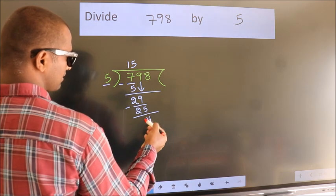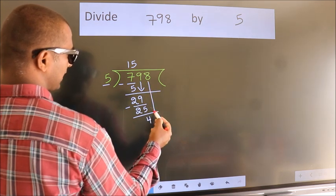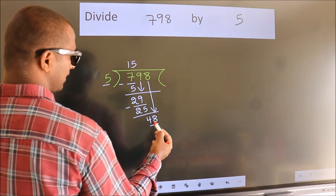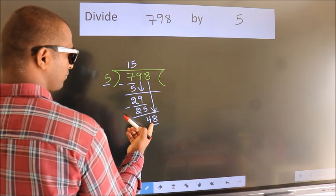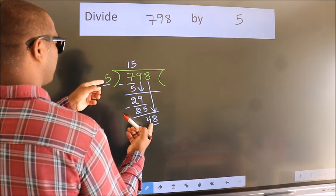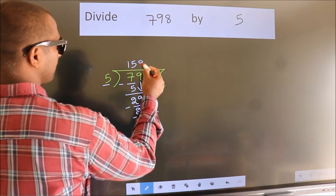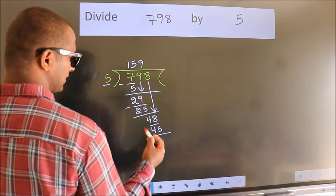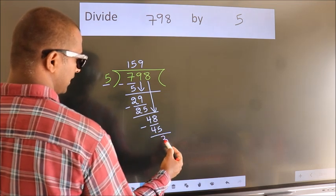After this, bring down the beside number. So 8 down, making 48. A number close to 48 in the 5 table is 5 nines, which is 45. Now we subtract and get 3.